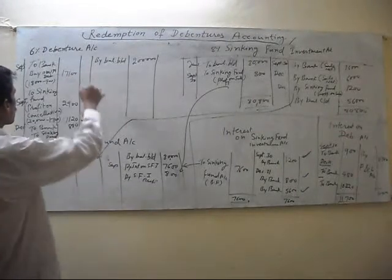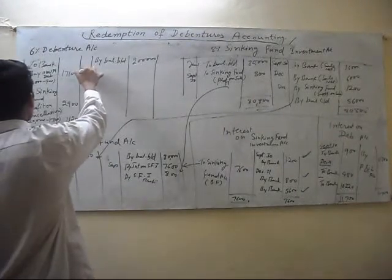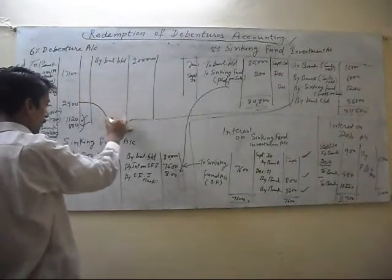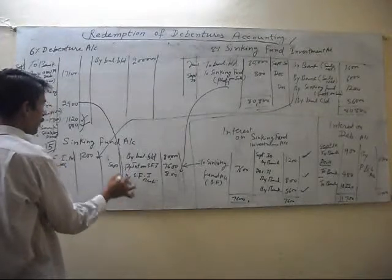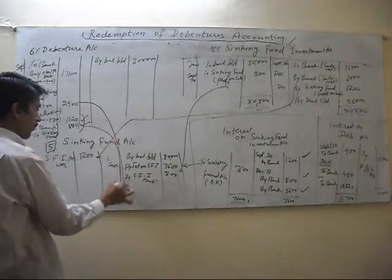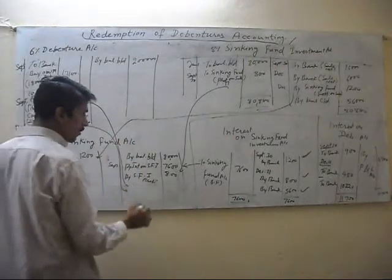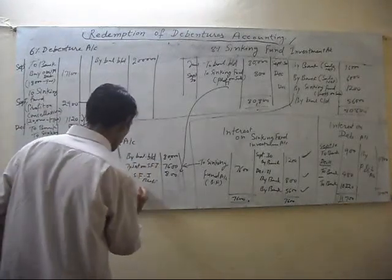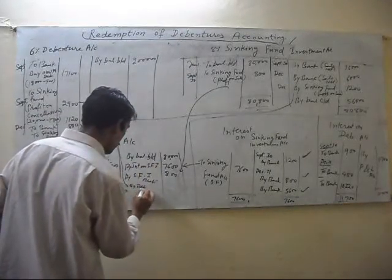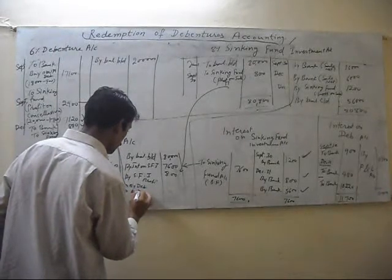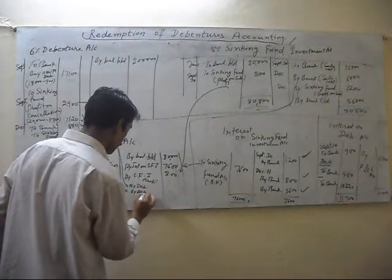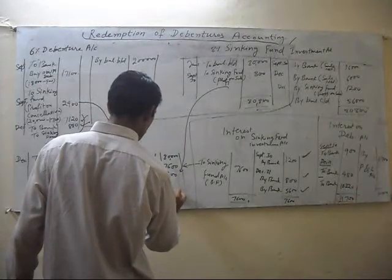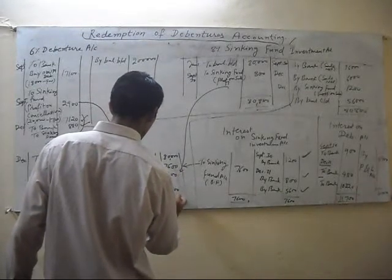We also transfer profit on the cancellation of all debentures — by Debentures. The figures are 2,900 and 880 respectively for September and December cancellations.